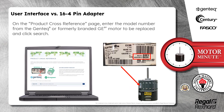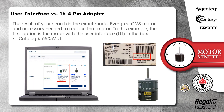On the Product Cross-Reference page, enter the model number from the Gentech or formerly branded GE motor to be replaced and click Search. The result of your search is the exact model Evergreen VS motor and accessory needed to replace that motor.